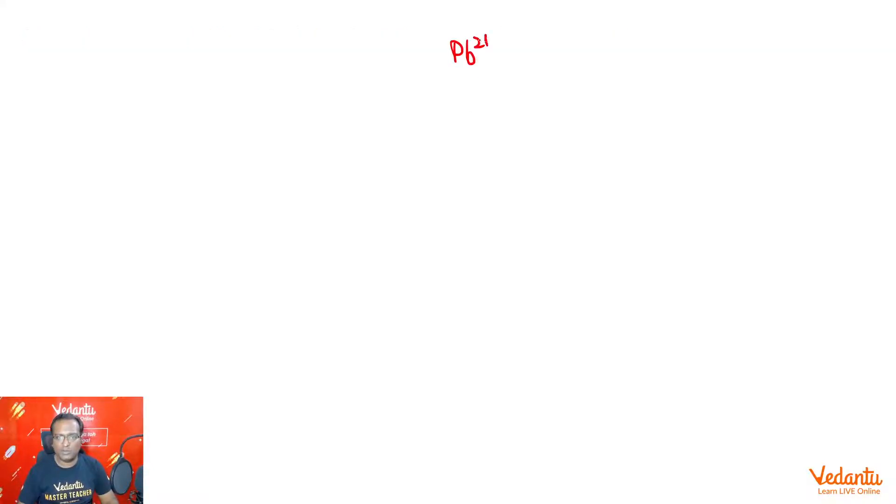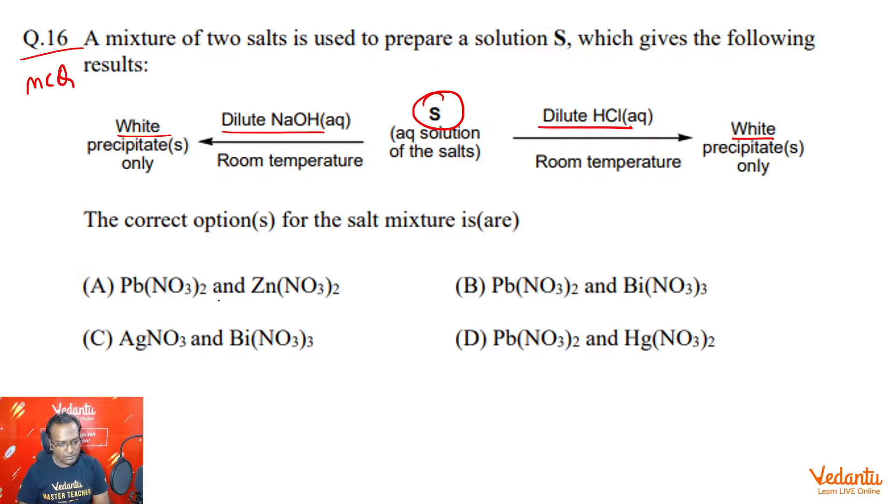First cation given to us was Pb2+, then we had Zn2+, then one of the cations was Bi3+, then the other was Hg2+, one was Ag+ - lead, zinc, these many.